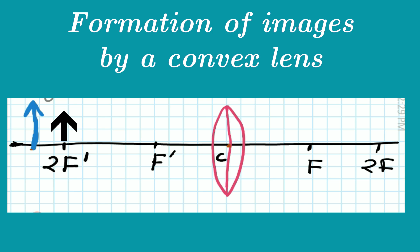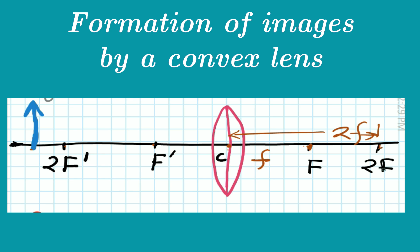This is the lens, and the point C is the optical center of the lens. The F shown here on the principal axis is the focus of the lens on the right side. 2F is twice the focal length — the distance from the optical center equal to twice F. The distance between C and F, the principal focus and optical center, is F. Similarly, on the left side there is another principal focus shown as F' and the twice-F distance from the optical center is 2F'.